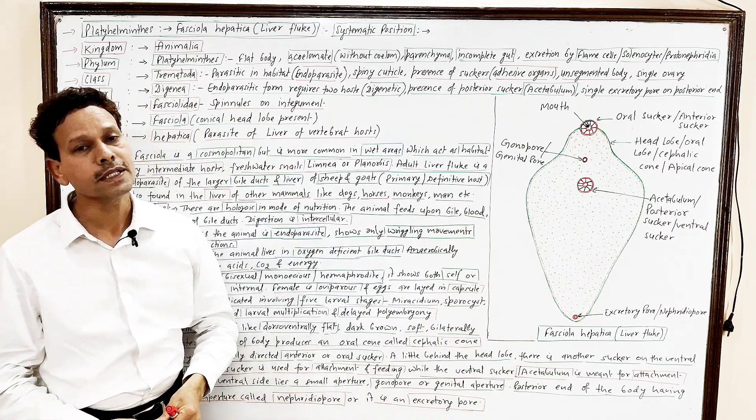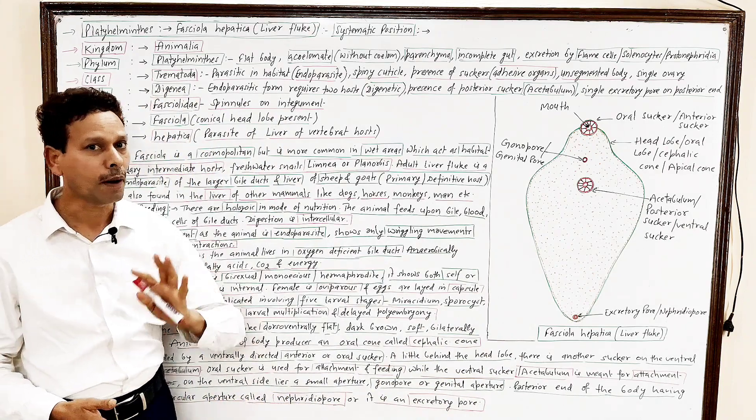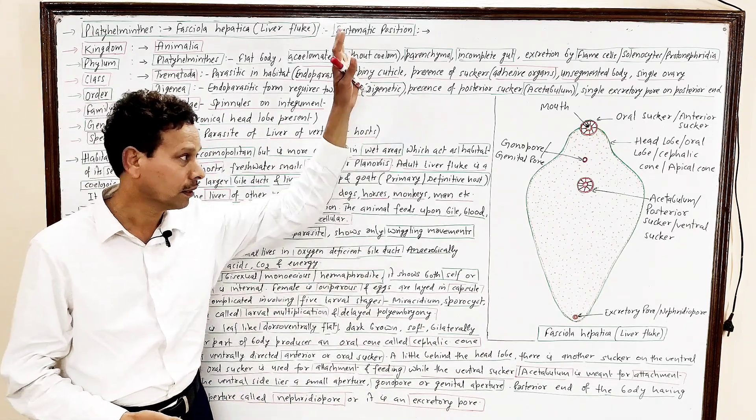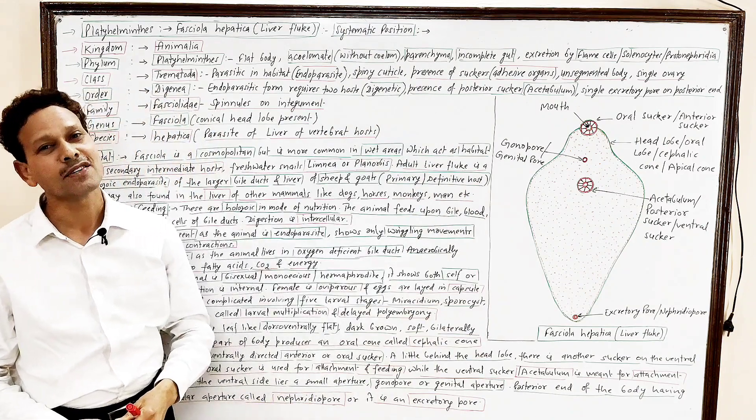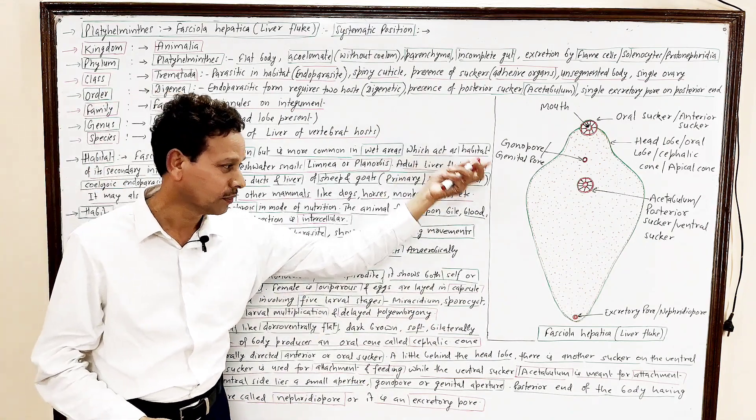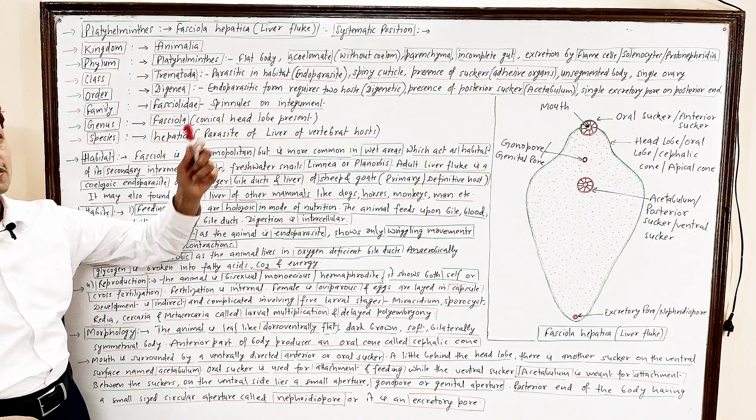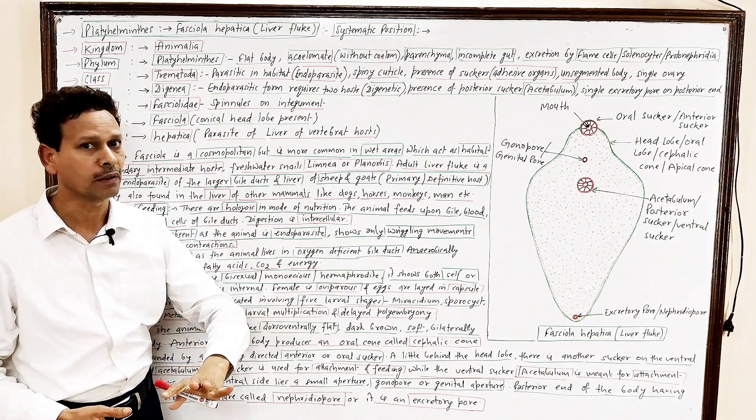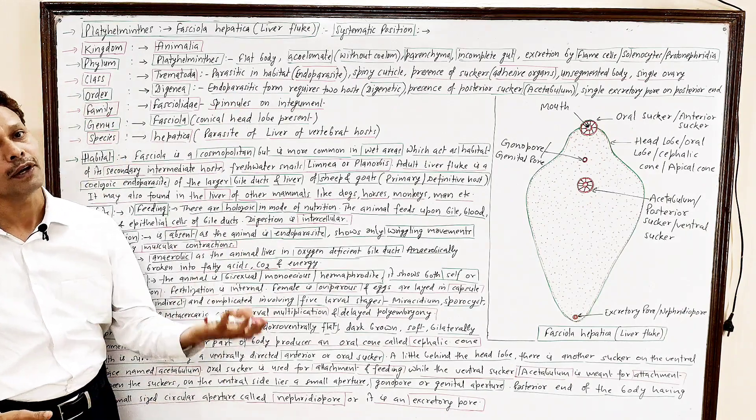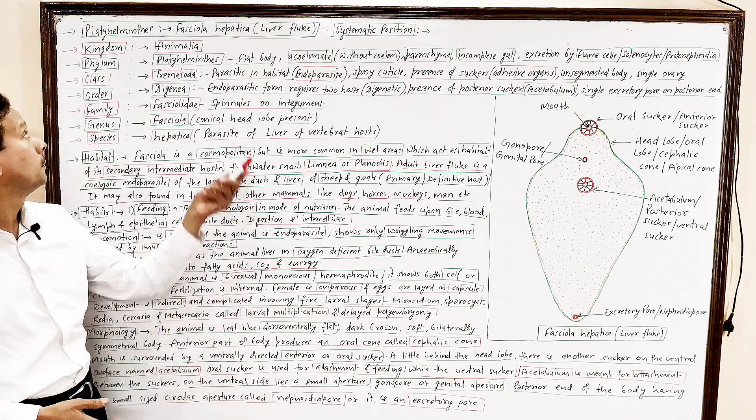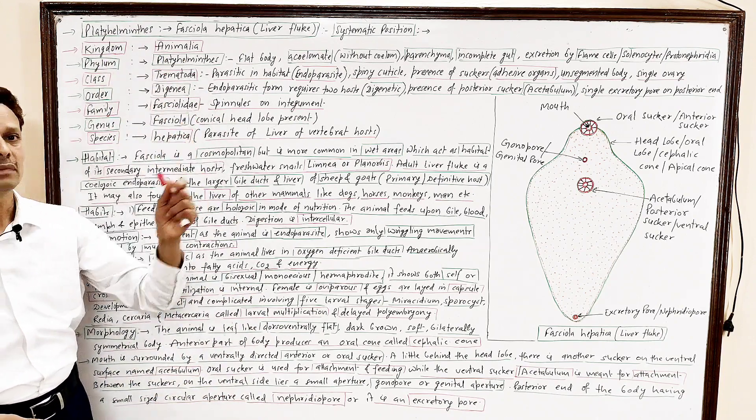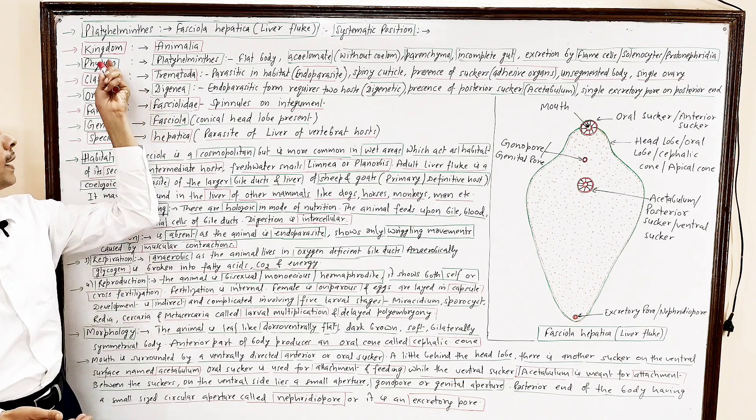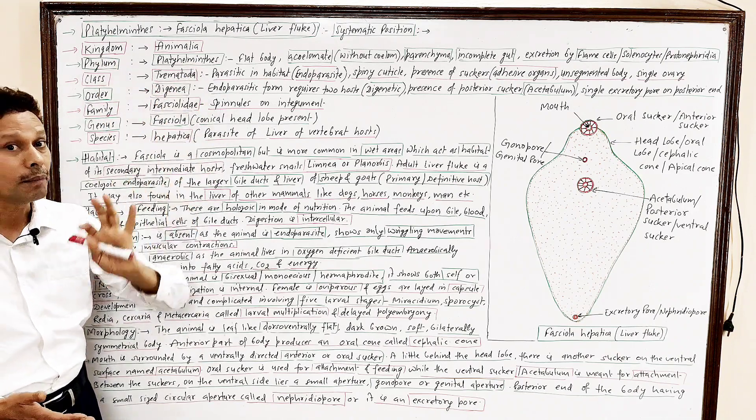The PDF file of all these notes have been uploaded in the description of video lecture. First of all, we will discuss systematic position, classification of liver fluke, Fasciola hepatica. Kingdom Animalia, phylum Platyhelminthes.